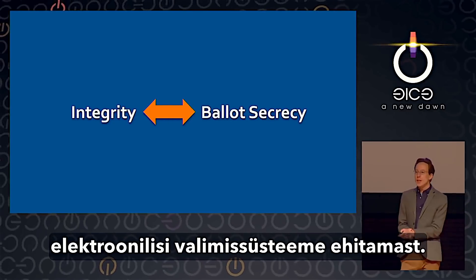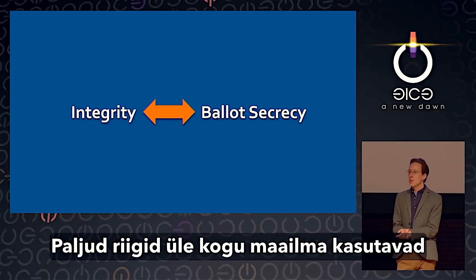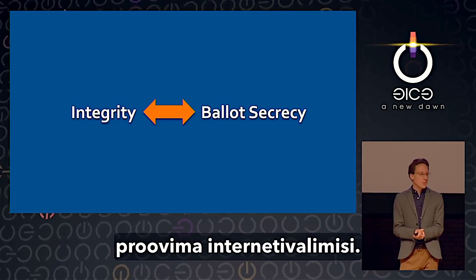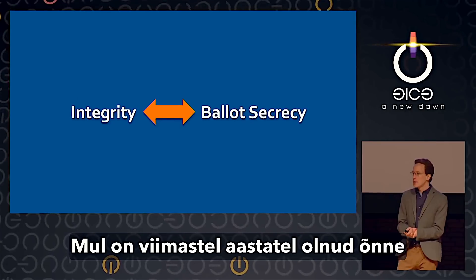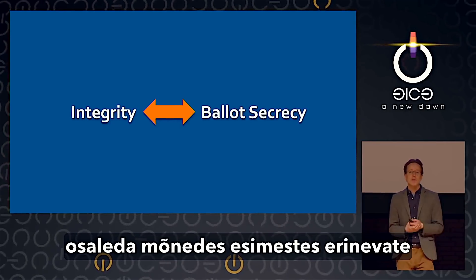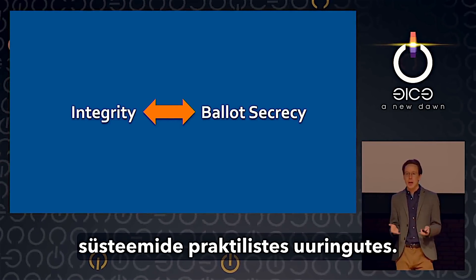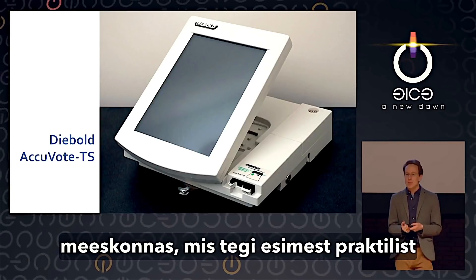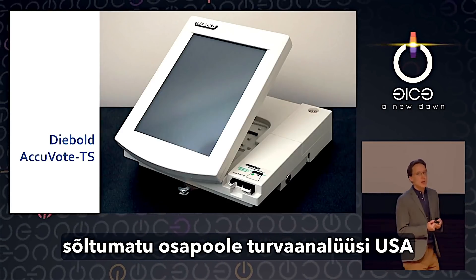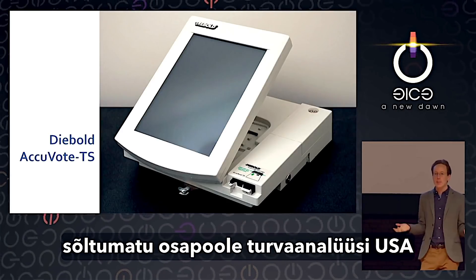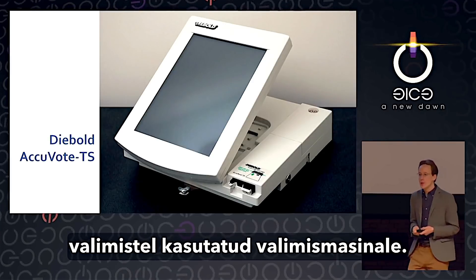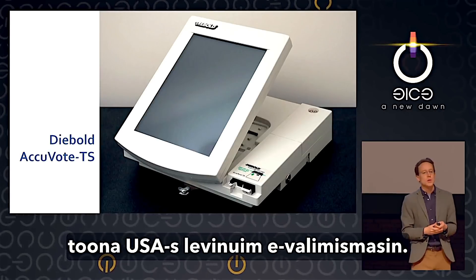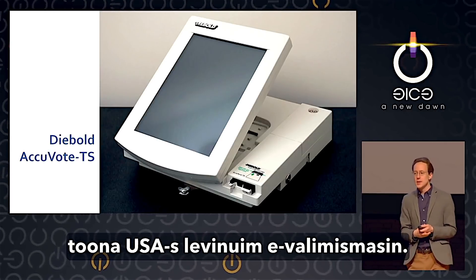That hasn't stopped people from building electronic voting systems, and many countries around the world use e-voting or are starting to try internet voting. In 2007, I was part of a team at Princeton that did the first hands-on security analysis by an independent party of an e-voting machine used in the U.S. — the Diebold AccuVote TS, which was the most widely used e-voting machine in the United States at the time.